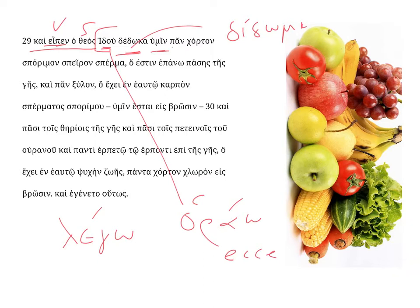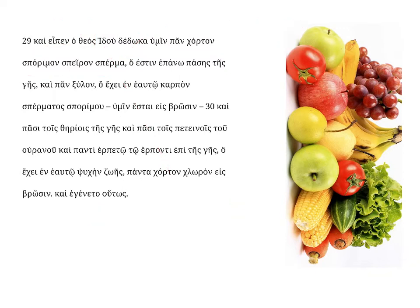Behold, I have given to you pan khortan spermon speron sperma — every plant, khortan. Every plant that is a spermon plant, a seed-bearing plant, which is bearing — speron — its seed. Speron is a participle, and its object is sperma, which is neuter.